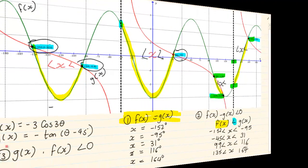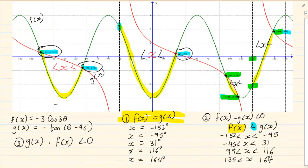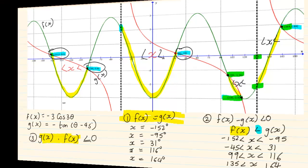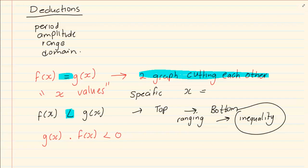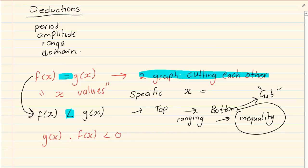The next style is where they say f of x times g of x is smaller than or equal to zero. When they're giving you a multiplication, it is not exactly the same as the first inequality where we looked at top and bottom — that was where the two graphs cut each other. But when it's g of x times f of x, this is a specific reference to where it cuts the x-axis. The emphasis is not on where the two graphs meet, but rather where any one of the graphs cuts the x-axis.